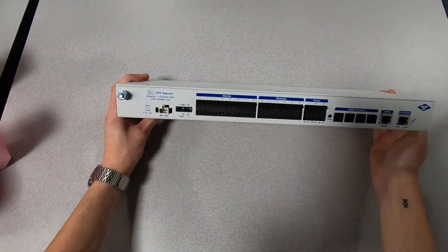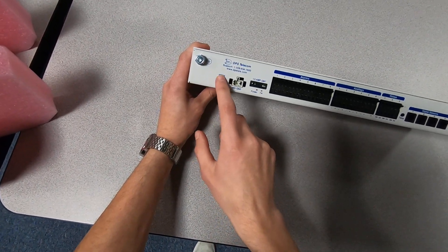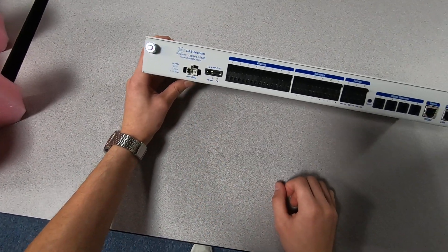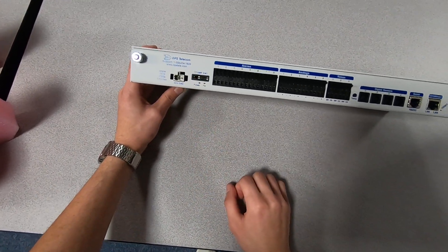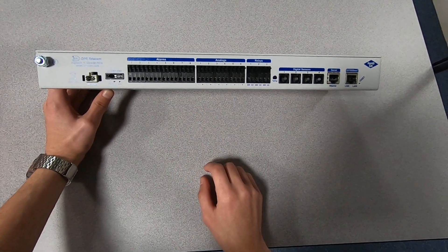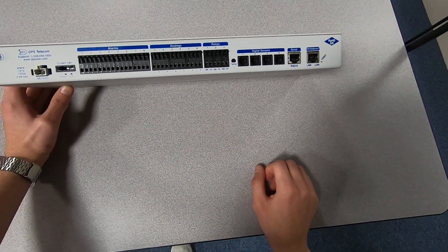If we flip it over, we have our power connector. Right next to it, we have our acceptable voltage range as well as our amperage. Here we have a spot for our fuse. And here we have our alarm and analog inputs, as well as our relay outputs.